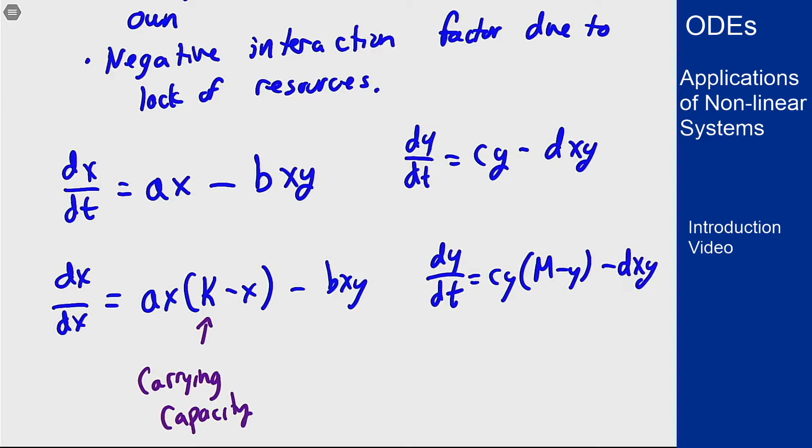So both of these give the same idea of two populations that grow on their own, and their interaction is negative towards both parties. That's the idea of a competing species model for the system. And again, if you look, these are both non-linear equations because of the xy term and also because of the product in the logistic growth version of the model.